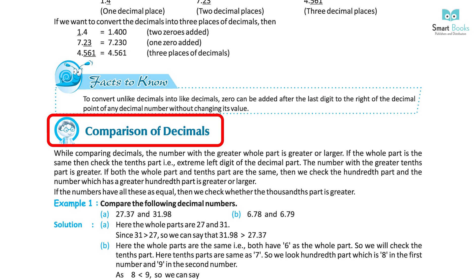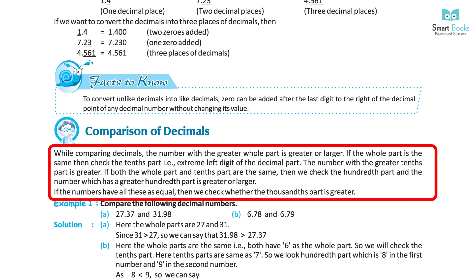Comparison of Decimals: While comparing decimals, the number with the greater whole part is greater. If the whole part is the same, then check the tenths part — the extreme left digit of the decimal part. The number with the greater tenths part is greater. If both the whole part and tenths part are the same, then we check the hundredths part, and so on to the thousandths part.